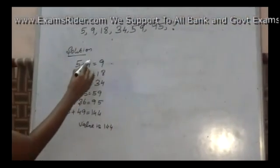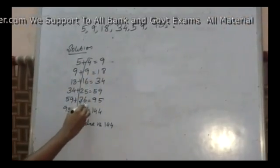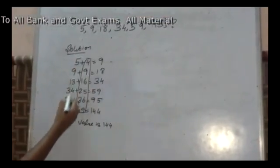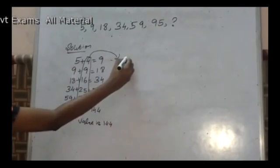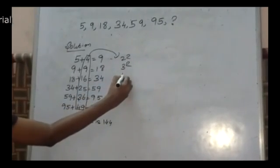Here, these numbers are square of the numbers. That is, 2 square, 3 square, 4 square, 5 square, 6 square and 7 square.